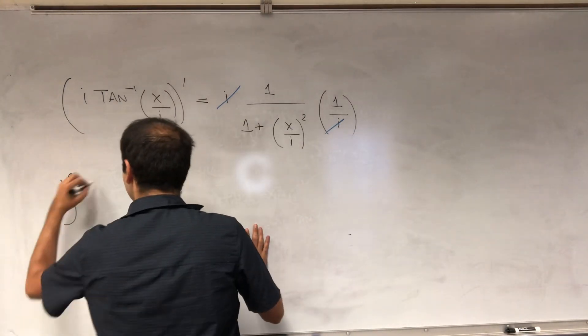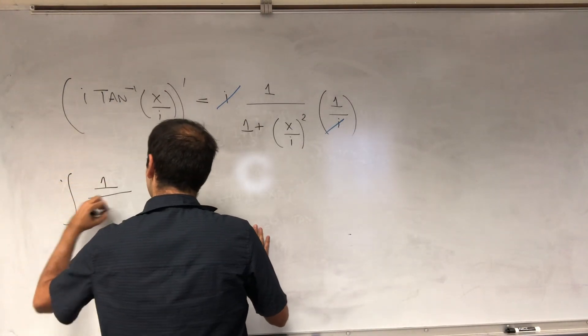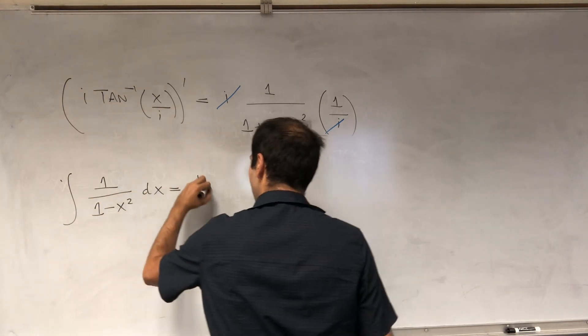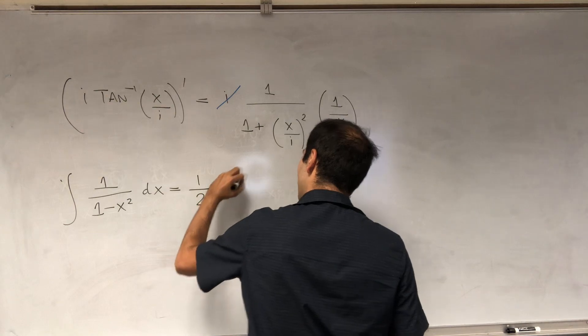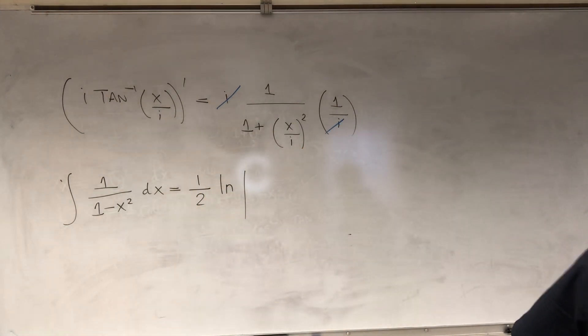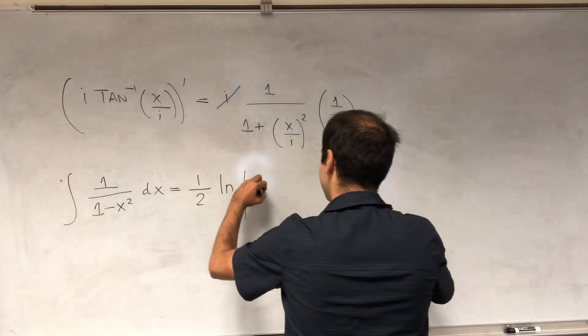Namely, we've also shown that the integral of 1 over 1 minus x squared dx is equal to, I think, one half of ln of, what was it, 1 plus x over 1 minus x,